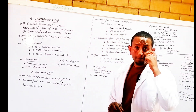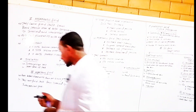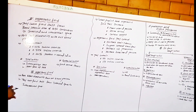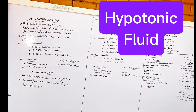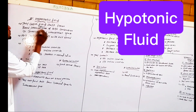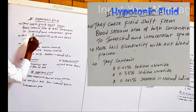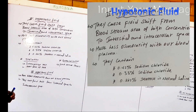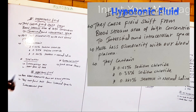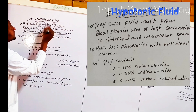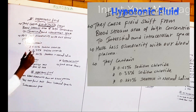Today we will look at the second part of crystalline fluid: hypotonic fluid. Hypotonic fluid causes a fluid shift from the bloodstream toward higher concentration areas — the interstitial space as well as the intracellular space. When hypotonic fluid is given to a patient, this fluid shifting occurs out of the bloodstream.